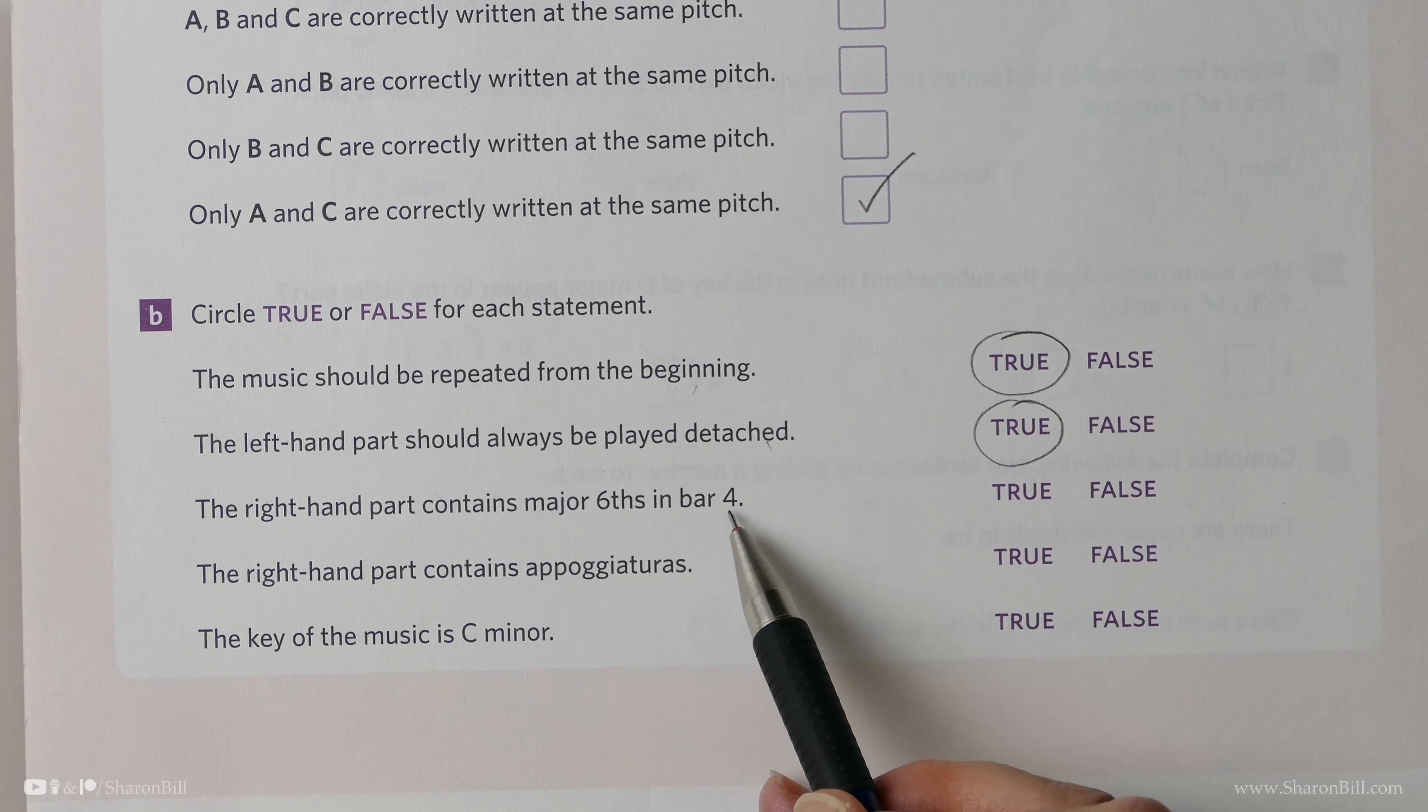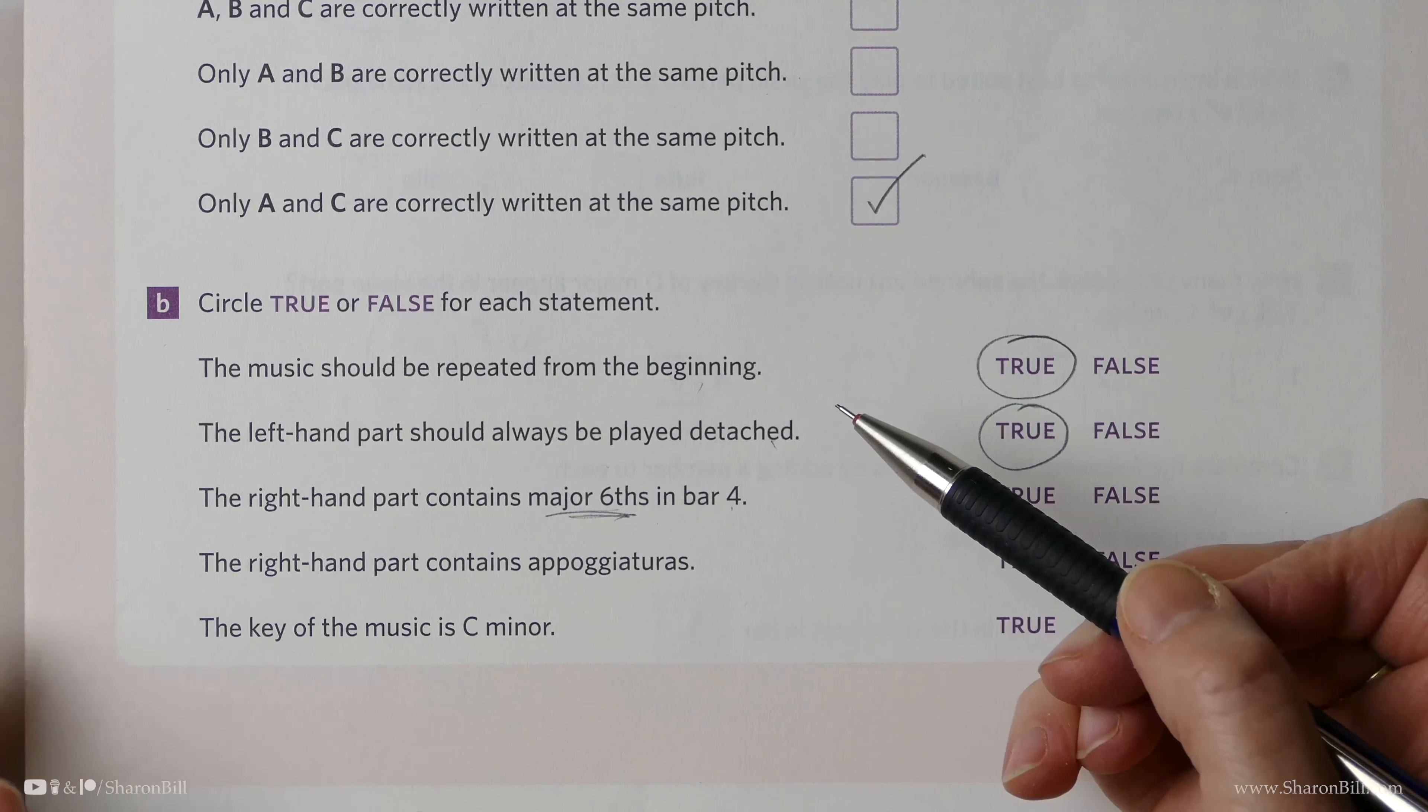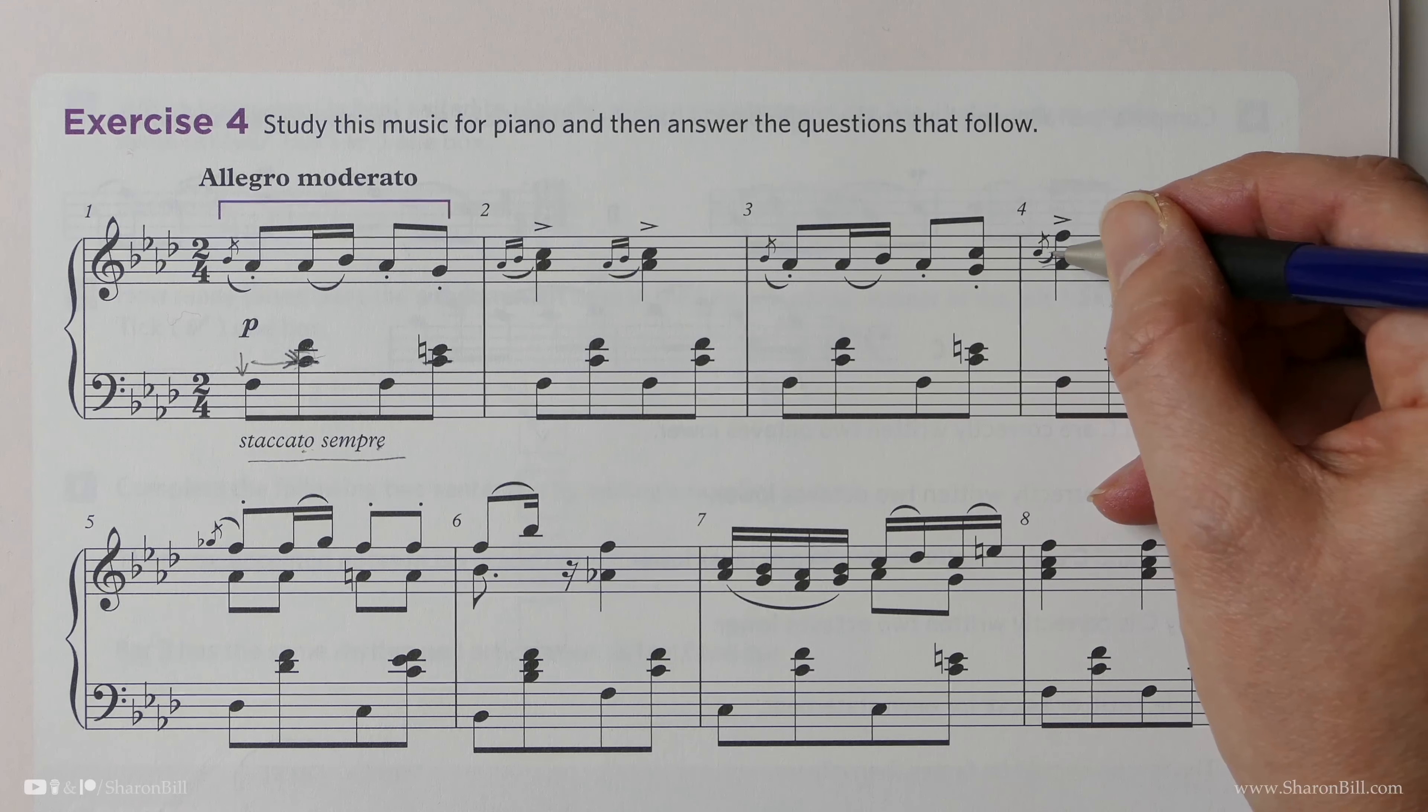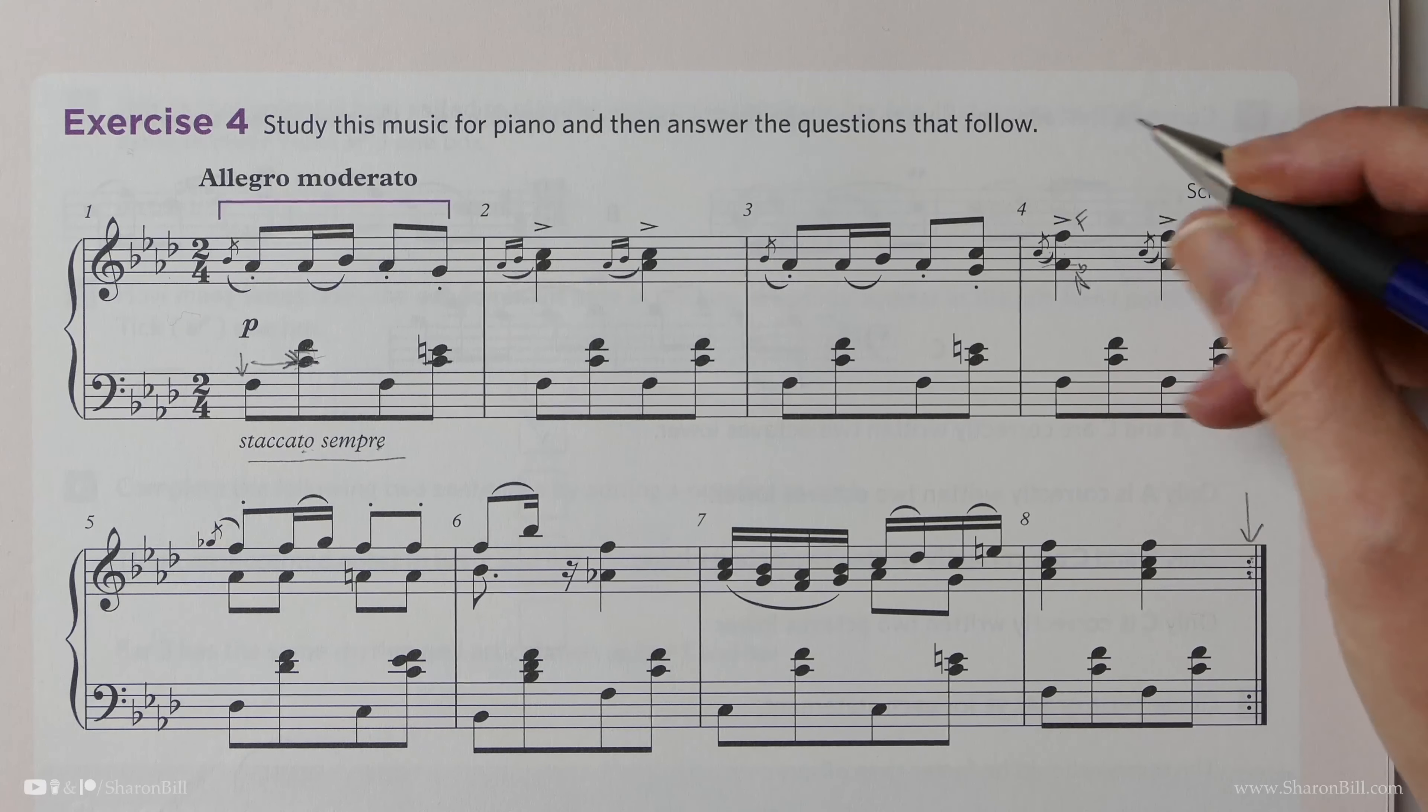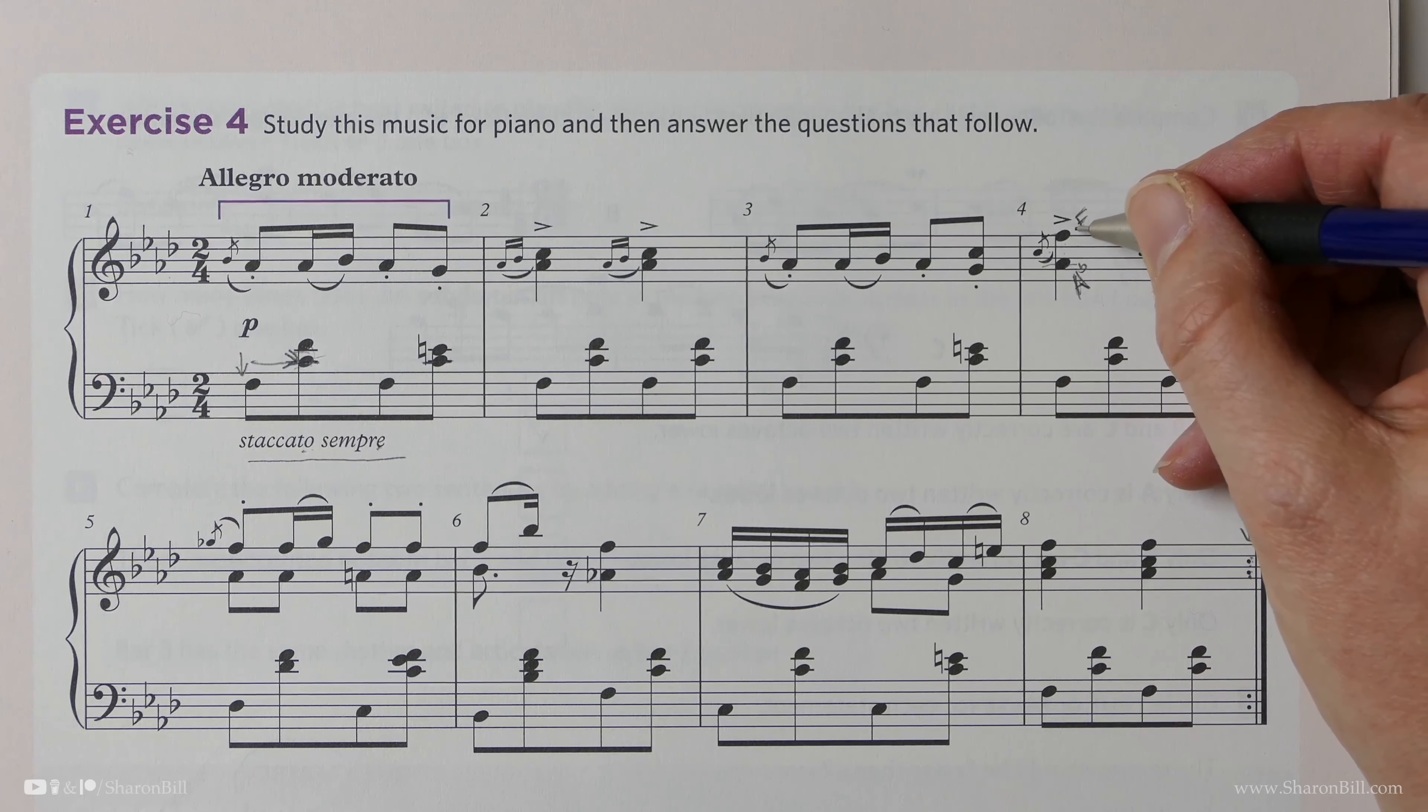Is it true that in bar four, the right hand of the piano part contains major sixths? Let's look at bar four. We're discounting the acciaccatura. We have one, two, three, four, five, six. That is a sixth, and it's A-flat to F. That's entirely consistent—A-flat major would have F naturals in it. That is exactly a major sixth. That is true.